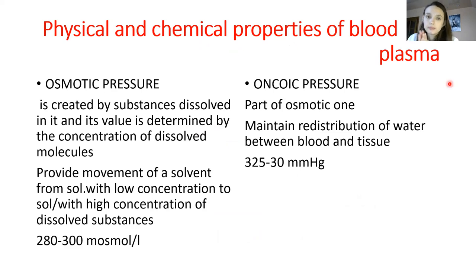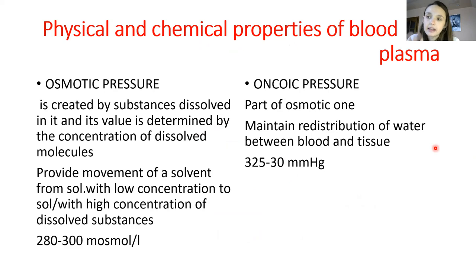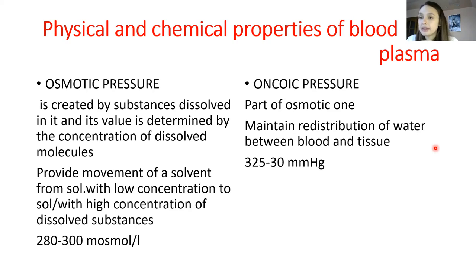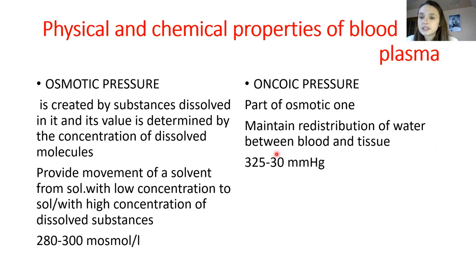Physico-chemical properties of blood and plasma: osmotic pressure is created by substances dissolved in it, and its value is determined by the concentration of dissolved molecules — mainly electrolytes — promoting movement of solvent from low concentration to high concentration. The normal value of osmotic pressure is 280 to 300 milliosmoles per liter. Oncotic pressure is mainly created by albumins. It is part of the osmotic pressure and is mainly responsible for redistribution of water between blood and tissue, with a value of 25 to 30 millimeters of mercury.